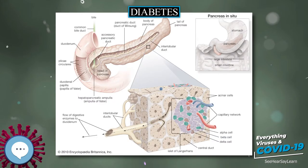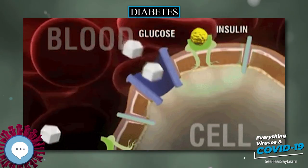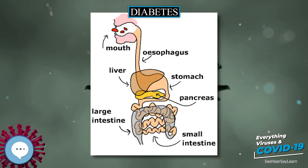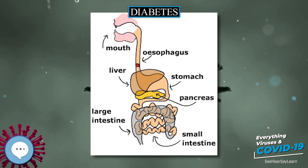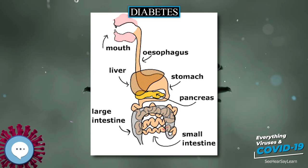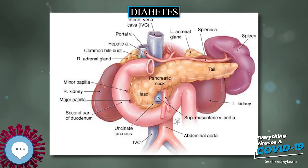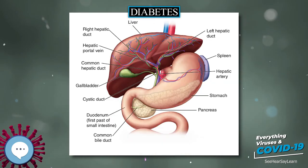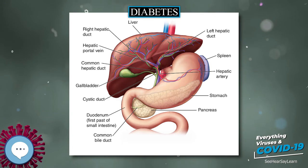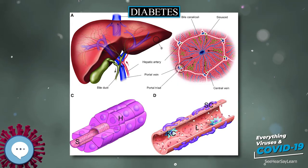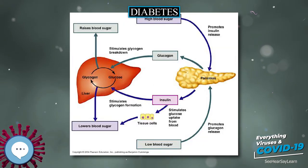Still, type 1 diabetes can be accompanied by irregular and unpredictable high blood sugar levels, and the potential for diabetic ketoacidosis or serious low blood sugar levels. Other complications include an impaired counter-regulatory response to low blood sugar, infection, gastroparesis, which leads to erratic absorption of dietary carbohydrates, and endocrinopathies, for example Addison's disease. These phenomena are believed to occur no more frequently than in 1% to 2% of persons with type 1 diabetes.